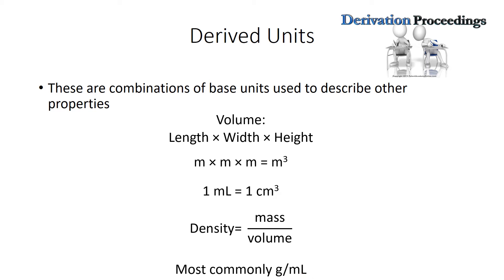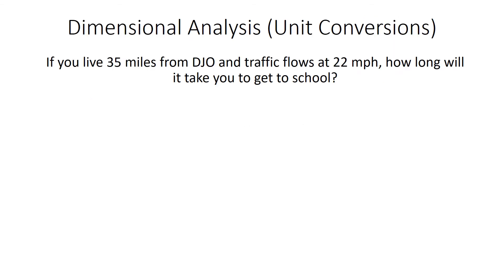So these are the derived units. I did want to do one other problem for you. This is going to form the basis of a problem that you're going to do in class. So I just wanted to walk this through. I think this is something you've probably done in math class, but I just wanted to show you how this works. So if you live 35 miles from DJO and traffic flows at 22 miles per hour, how long will it take you to get to school? So you have a distance and you have a speed, and it's asking you to find a time.